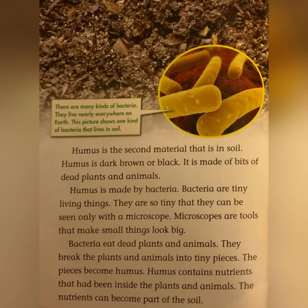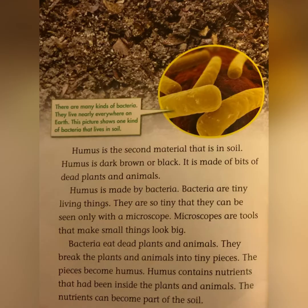Humus is the second material that is in soil. Humus is dark brown or black. It is made of bits of dead plants and animals. Humus is made by bacteria. Bacteria are tiny living things — they are so tiny that they can be seen only with a microscope. Microscopes are tools that make small things look big. Bacteria eat dead plants and animals and break them into tiny pieces. The pieces become humus, which contains nutrients that have been inside the plants and animals.